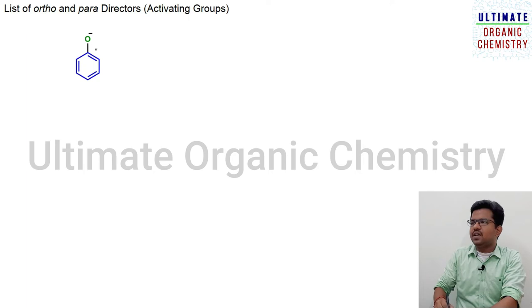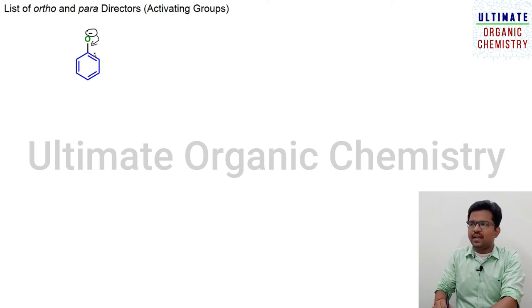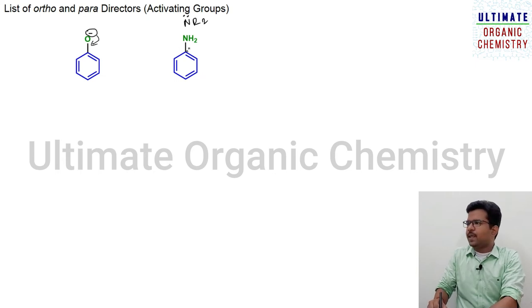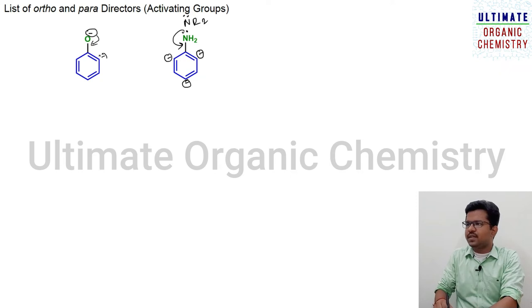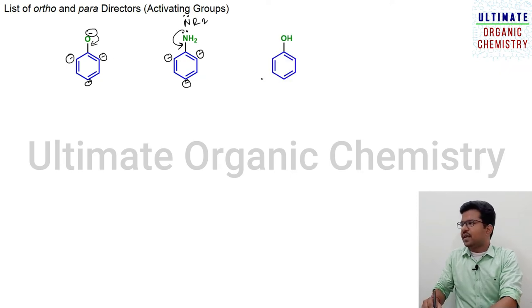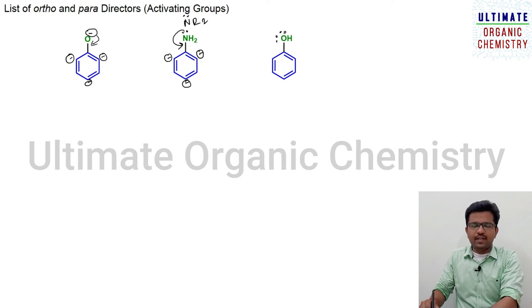The first example is phenoxide — oxygen having a negative charge, meaning it is rich in electrons and can easily donate electrons to the benzene ring, activating the system, so it is an ortho-para director. Next is amine (NH2 or NR2) — nitrogen's lone pair also donates electrons to the benzene ring, leading to negative charge at ortho and para positions, so it is an ortho-para director. Then phenol (OH, hydroxy group) with two lone pairs — already explained — is also an ortho-para director.